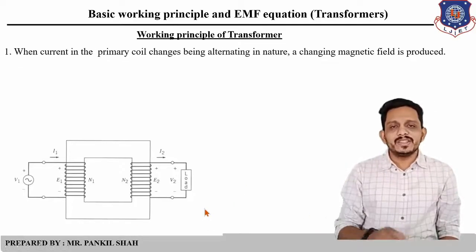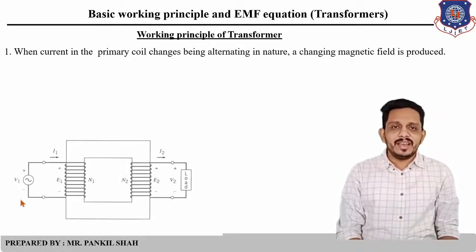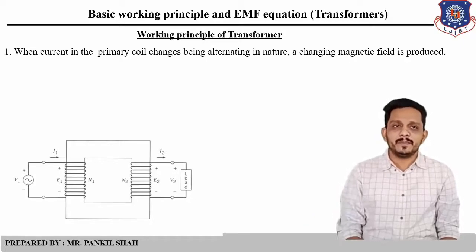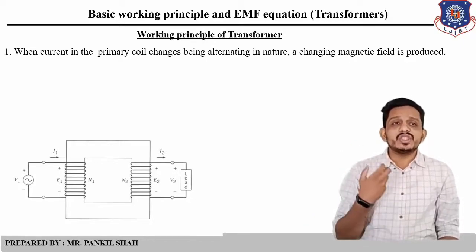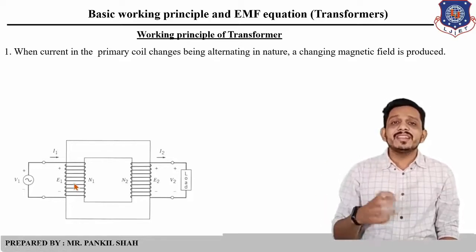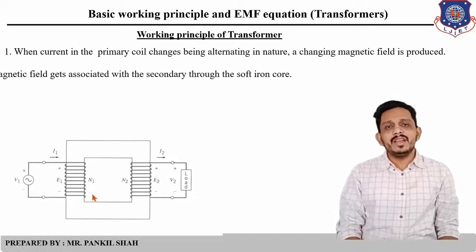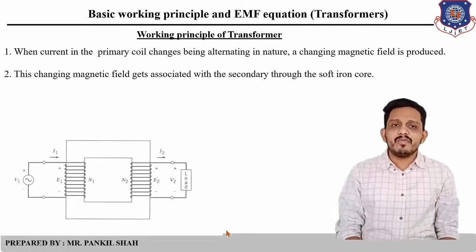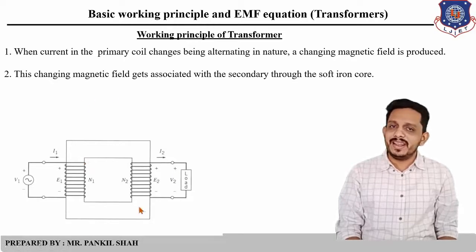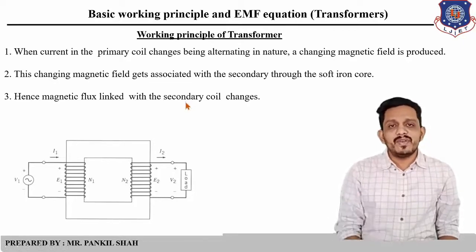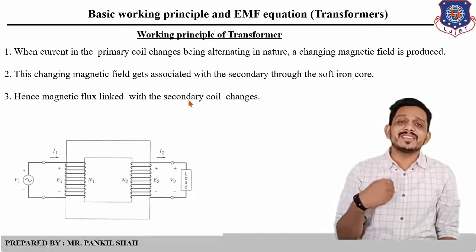Now let us see the working principle of a transformer. Whenever we connect the AC voltage source V1 to the primary winding, this primary winding carries electric current which produces a change in the magnetic field. So whenever you supply AC current to the primary winding, a changing alternating flux will be produced in the primary winding. The second step is that this changing magnetic field gets associated with the secondary winding through the magnetic core. So flux produced here links towards the secondary winding through this magnetic core.